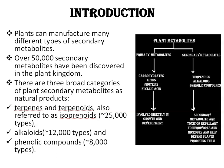Plants can manufacture many different types of secondary metabolites. Over 50,000 secondary metabolites have been discovered in the plant kingdom. There are three broad categories of plant secondary metabolites as natural products: terpenes and terpenoids, alkaloids, and phenolic compounds. Approximately 25,000 different types of terpenes and terpenoids, 12,000 different types of alkaloids, and approximately 8,000 different types of phenolic compounds have been identified in plants.